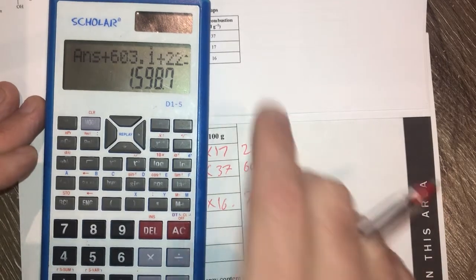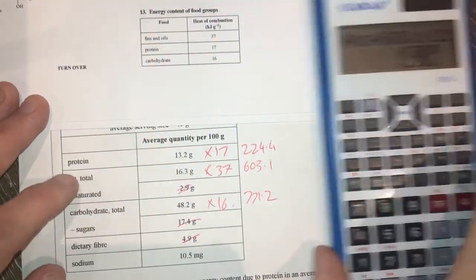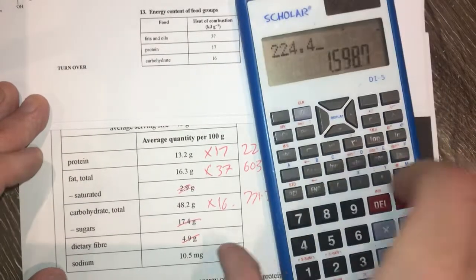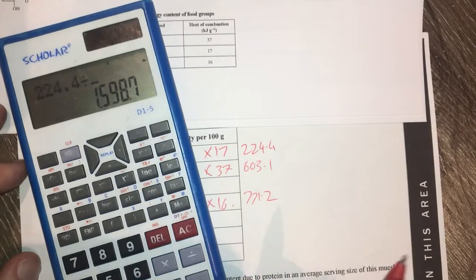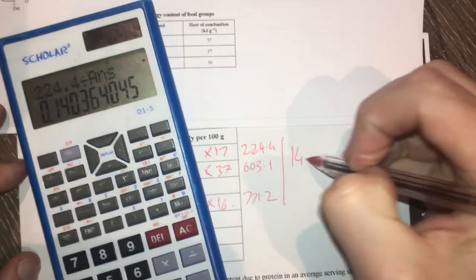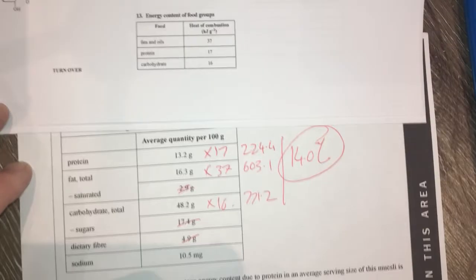I'll take the protein which is 224.4 and then I'll divide that by my answer and it will give me around about 14.0 percent. So therefore it should be C.